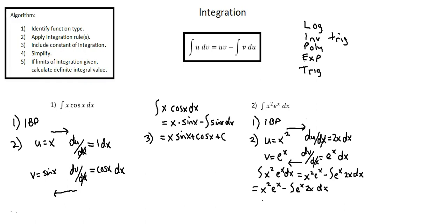So again, looking for u — working our way down the LIATE list, we have no log function, no inverse trig function. We do have a polynomial function: 2x. du/dx is 2, and multiplying by dx we have du equals 2 dx.